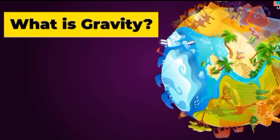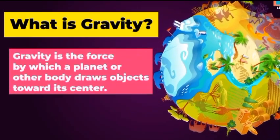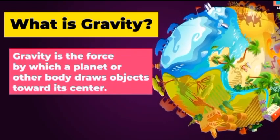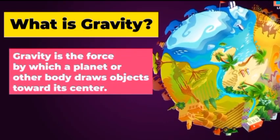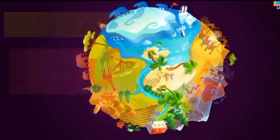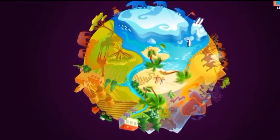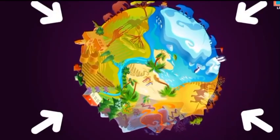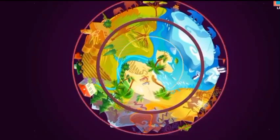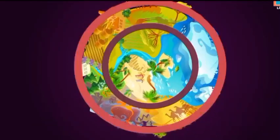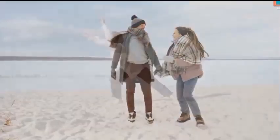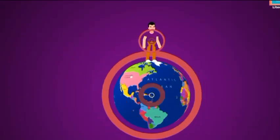Gravity is defined as the force by which a planet or other body draws objects towards its center. The force of gravity keeps all of the planets in orbit around the sun. Anything that has mass also has gravity. Objects with more mass have more gravity. Gravity also gets weaker with distance, so the closer objects are to each other, the stronger their gravitational pull is.